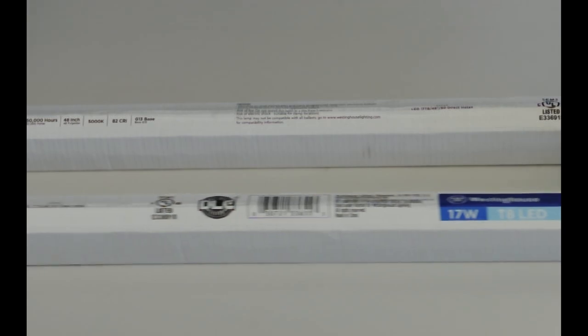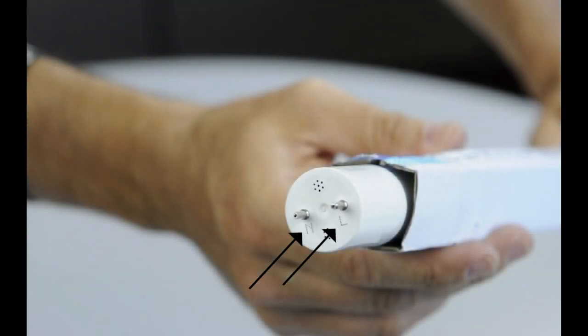Only one end of the TLED tube receives power. The powered end is indicated by mark with L and N on the tube itself.